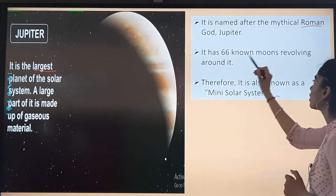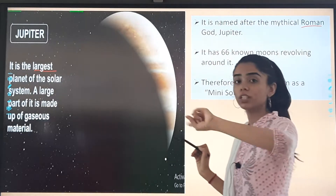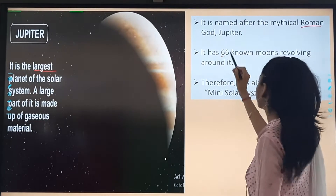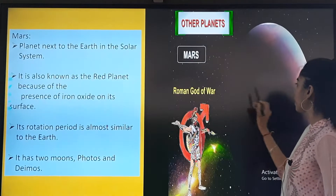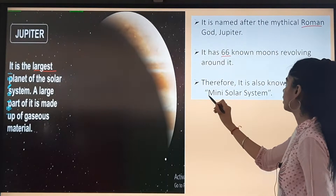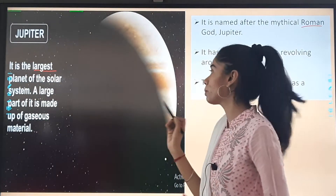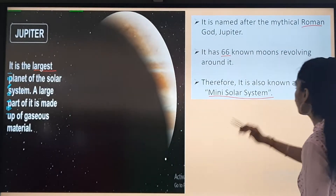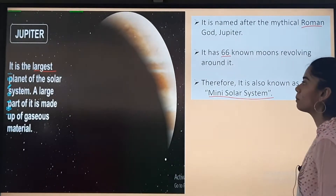Jupiter has 66 known moons revolving around it. Therefore, it is also known as the mini solar system. Why is Jupiter known as the mini solar system? Because it is the largest planet and it has 66 moons.